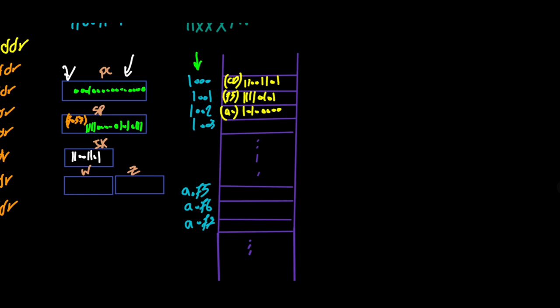Even though we haven't explained all the details of how the fetch machine cycle takes place, by now you know that the PC would put its value on the address bus and tell the memory to put its value on the data bus. The contents of the selected memory cell would be put on the 8-bit data bus, which is multiplexed — all these details would be explained later — and the CPU would read this value into the IR register. This first machine cycle we call a fetch machine cycle.